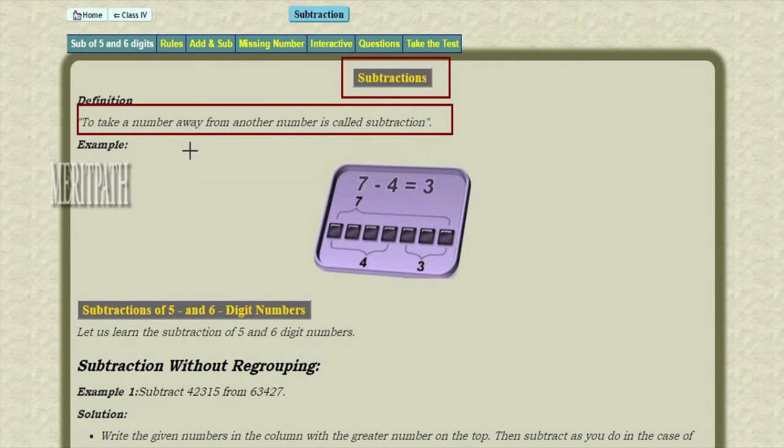Subtraction: To take a number away from another number is called subtraction. Example: Let us take a number 7. 7 minus 4 equals 3.